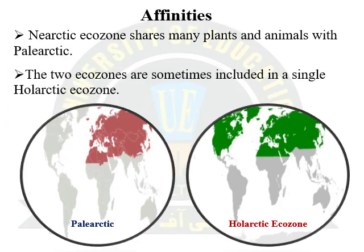Now we will discuss the affinities of the Nearctic region with some other areas. Most ecozones have been isolated and evolved separately from each other through the course of time. The existence of similarities may be due to chance, plate tectonics, or may be the result of faunal interchange due to the establishment of physical connections between different ecozones. The Bering Land Bridge connected the Nearctic region to the Eurasian region, enabling animal exchange between these two areas. Similarly, the Isthmus of Panama was the source of the Great American Interchange between the two American continents.